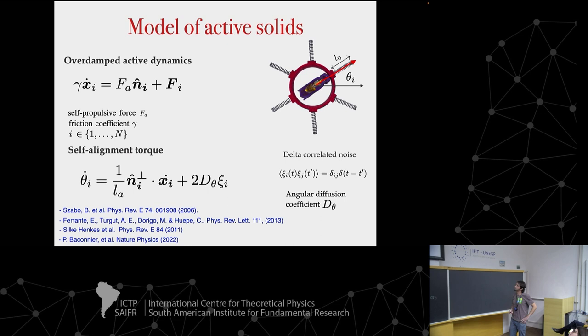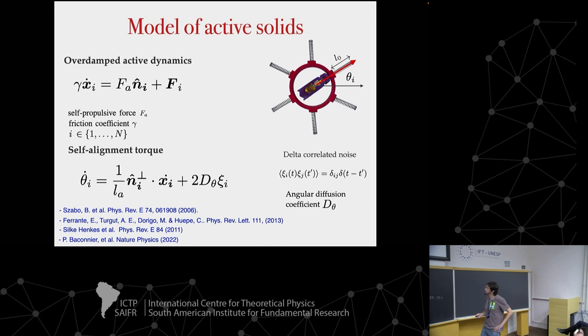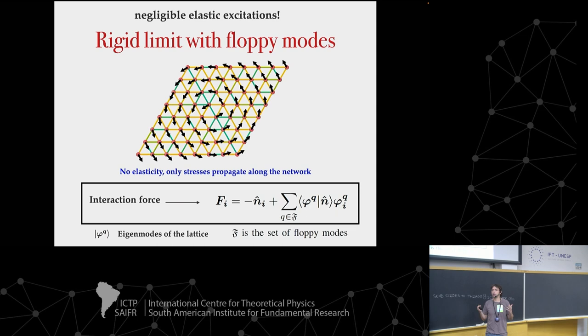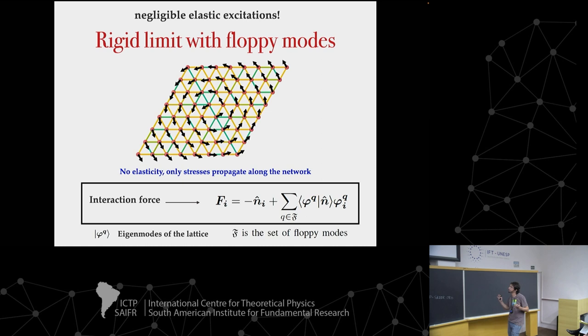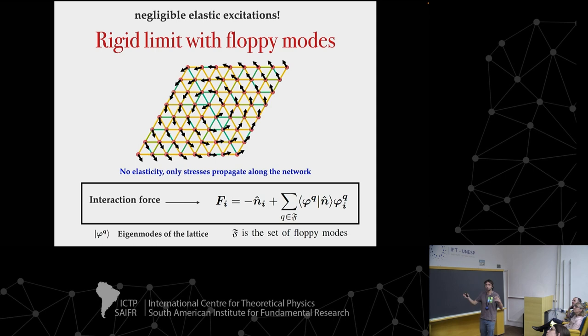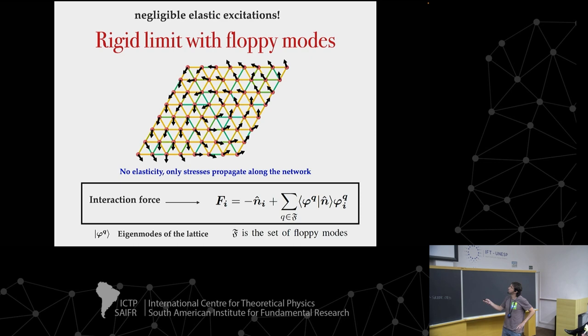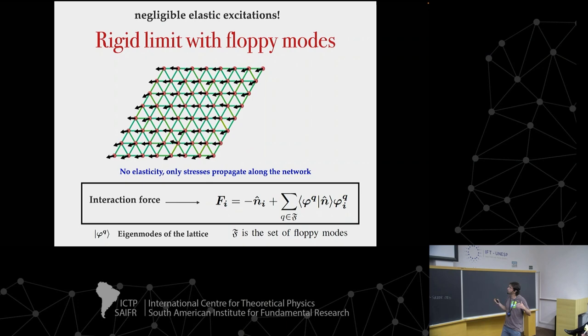We add delta-correlated noise to make the model more general. The first thing we did was simplify: we completely neglect the elasticity but not the stresses — we take the rigid limit, where the system does not deform but stresses propagate, like a rigid bar. What happens is that the different elements, even if not deforming, can still organize and form collective motion.